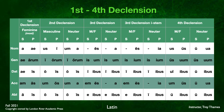Third declension masculine and feminine endings are the same, with a blank to represent the varied endings in the nominative singular case: blank, -is, -i, -em, -e; plural -es, -um, -ibus, -es, -ibus. Third declension neuter is very similar, just changing in the nominative and accusative plural forms, and of course the accusative singular because of the neuter rule — whatever's in the nominative has to be in the accusative: blank, -is, -i, blank, -e; plural -a, -um, -ibus, -a, -ibus.